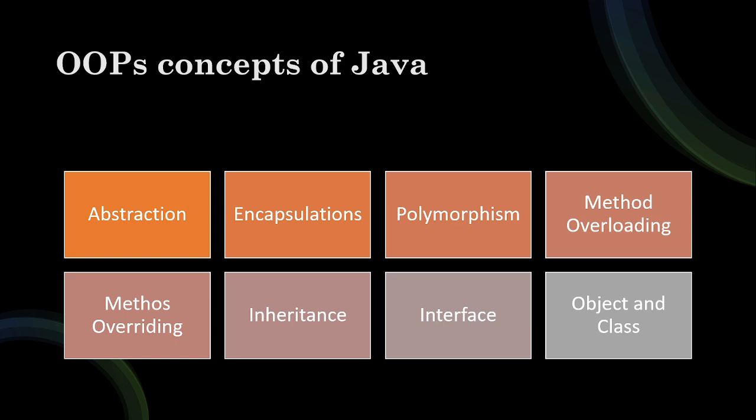The questions they will ask: first, 'tell me about OOP concepts.' Then they will ask what is abstraction, what is encapsulation, and what is the difference between them. Then how we can achieve polymorphism and what are the types of polymorphism. They may ask the difference between method overloading and method overriding. Then inheritance, then interface — like what is the difference between abstract class and interface. Then what is an object, how we can create an object, and what is a class.